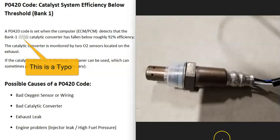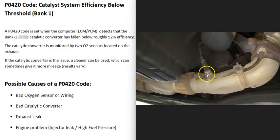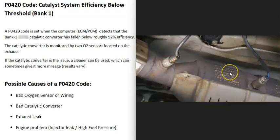This code relates to oxygen sensors located on the exhaust. They do two things: first, they monitor how much oxygen was burnt off during combustion, and the computer uses this to adjust the air-fuel ratio going into the cylinders. Second, they monitor the catalytic converter, and when it falls below a set efficiency threshold, they report this back to the computer, which sets the P0420 code.